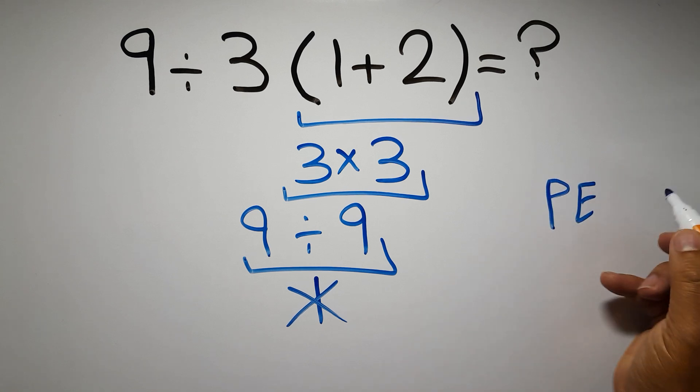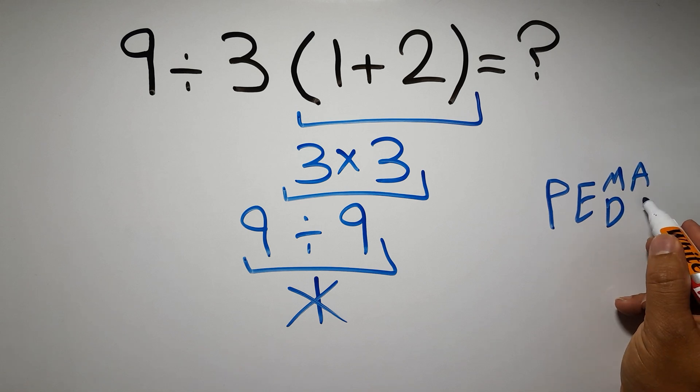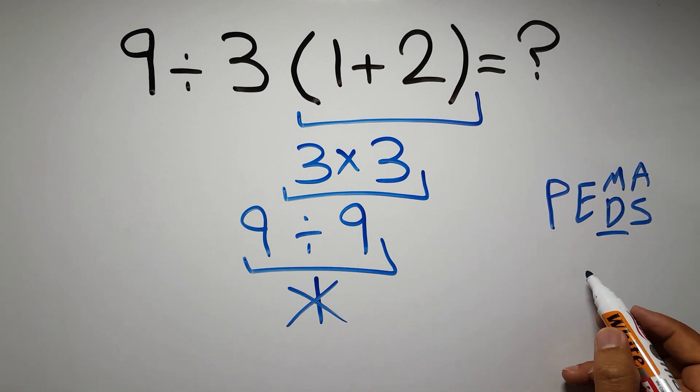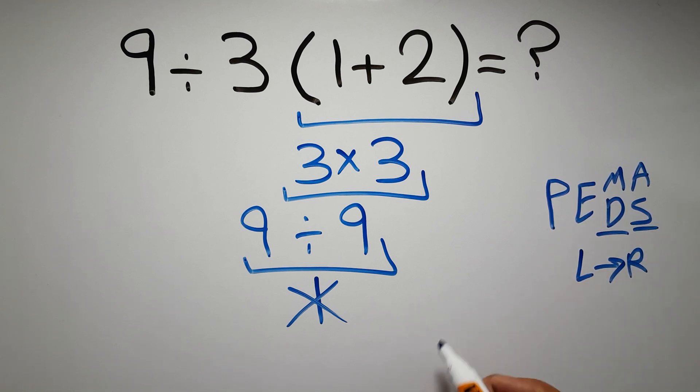do parentheses, then exponents, then multiplication or division, and finally addition or subtraction. Remember that multiplication and division have equal priority and we have to work from left to right, and the same applies to addition and subtraction.